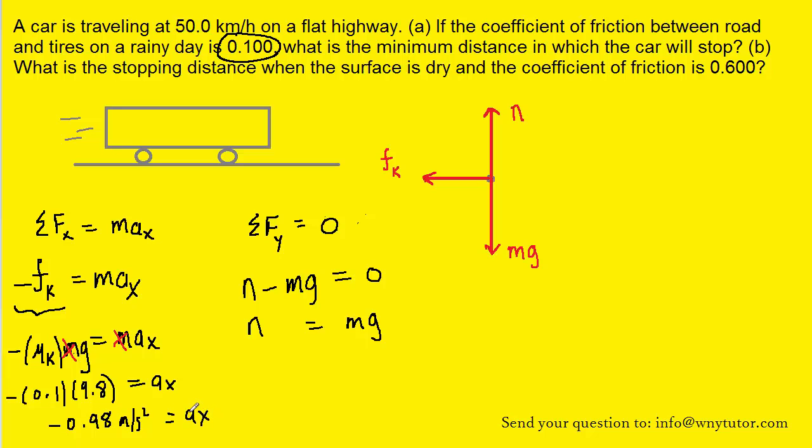Now we're going to use that information to help us find the minimum distance in which the car stops. Recall from kinematics that the final velocity squared equals the initial velocity squared plus 2 times the acceleration times the displacement. It is the displacement that we are trying to solve for, so let's plug in some known values.